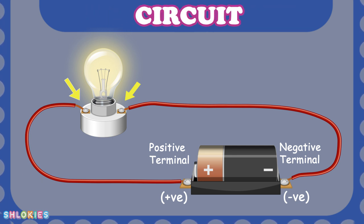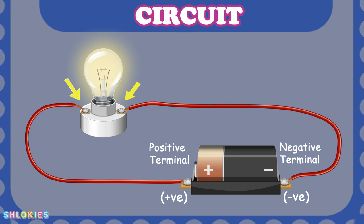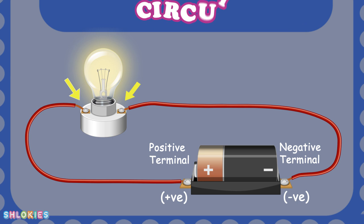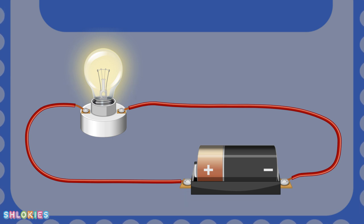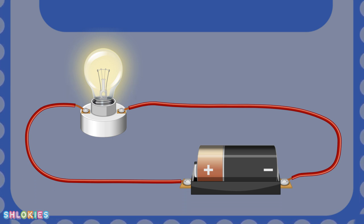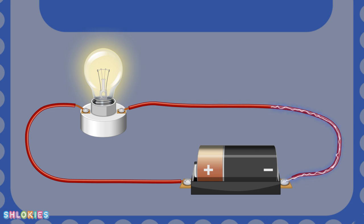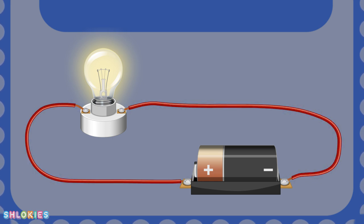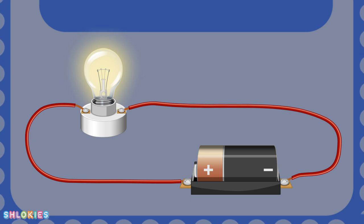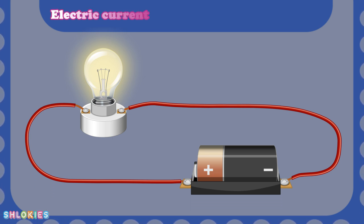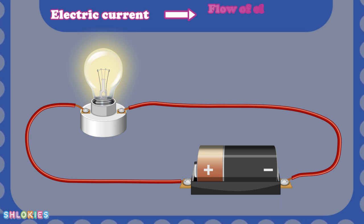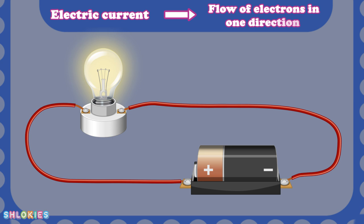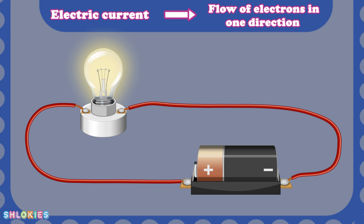The word circuit is very important here. Electric circuit is the path along which electric current can flow. Basically, it is the flow of electricity, or the electric current is the flow of electrons in one direction.